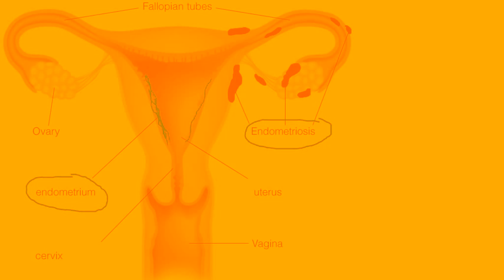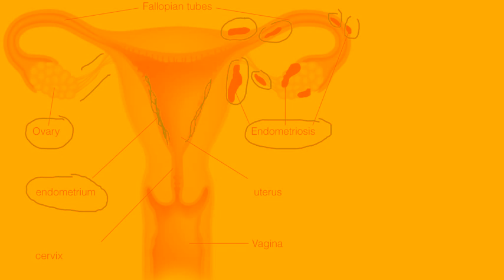In endometriosis, this tissue colored in green has found its way into ectopic areas — places where it's not supposed to be. In this diagram, they've shown a few areas: the ovary and the outside of the fallopian tubes. These implants or ectopic tissues can be found in many places, including ligaments. That's the fundamental aspect of endometriosis — endometrial tissue has somehow found its way to ectopic areas, and that causes problems.